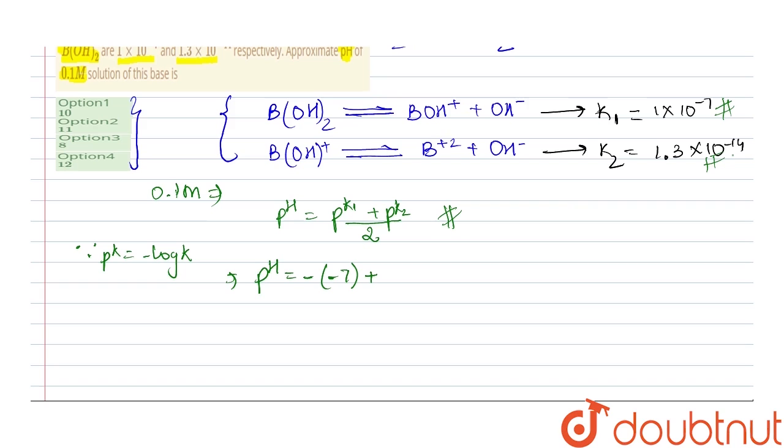pH value comes out to be 10.44, which can be approximated as 10. So pH approximately equals 10. Now if we see the options, option number one says 10, and this is the correct option.